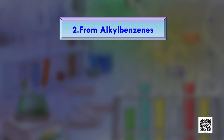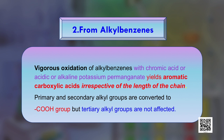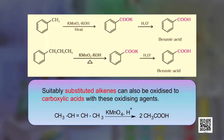The second method is from alkyl benzenes. Vigorous oxidation of alkyl benzenes with chromic acid or acidic or alkaline potassium permanganate yields aromatic carboxylic acids, irrespective of the length of the carbon chain in the starting material. Whether we start with a primary or secondary alkyl group on the benzene ring, the whole chain gets converted to a COOH group. However, tertiary alkyl groups are not affected by these reagents. For example, toluene can be oxidized to benzoic acid, and even ethylbenzene or propylbenzene gives only benzoic acid as the product.